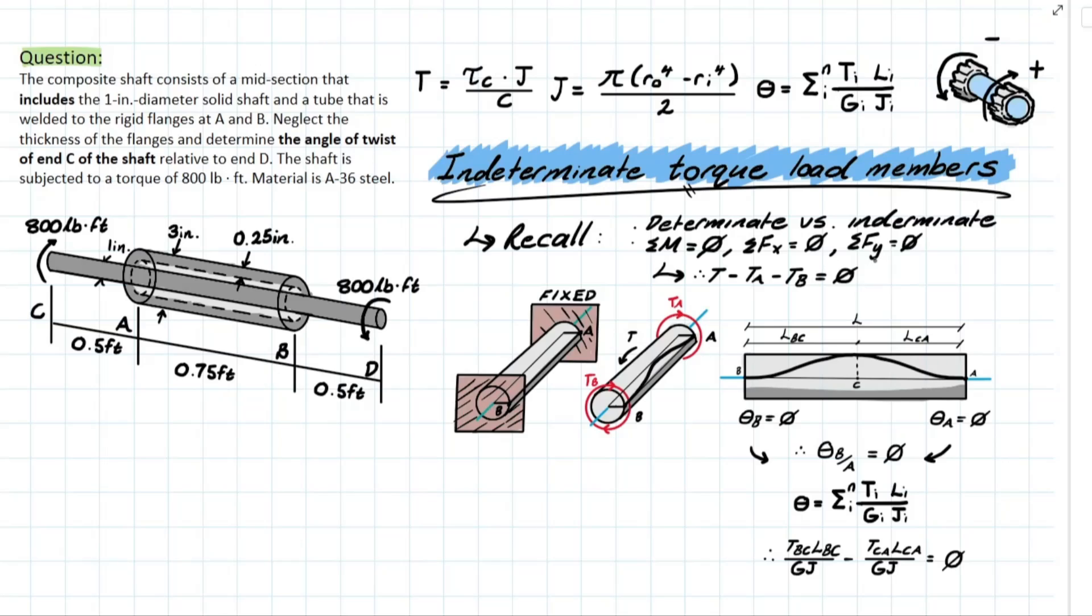However, when these equations are not enough, we deem the member as indeterminate, and it's pretty much as simple as that. The only difference now is that when we're looking at a torque-loaded member, we have to consider moment, the summation of moment at zero. Why do I say that? It's because torque is pretty much just a fancy moment. As I've discussed before, the only difference is we are now acting about the longitudinal axis.